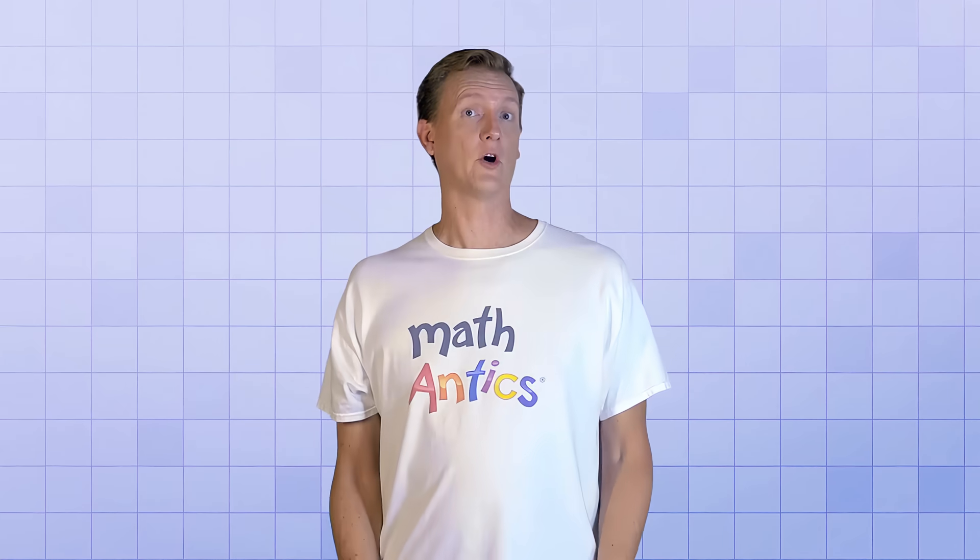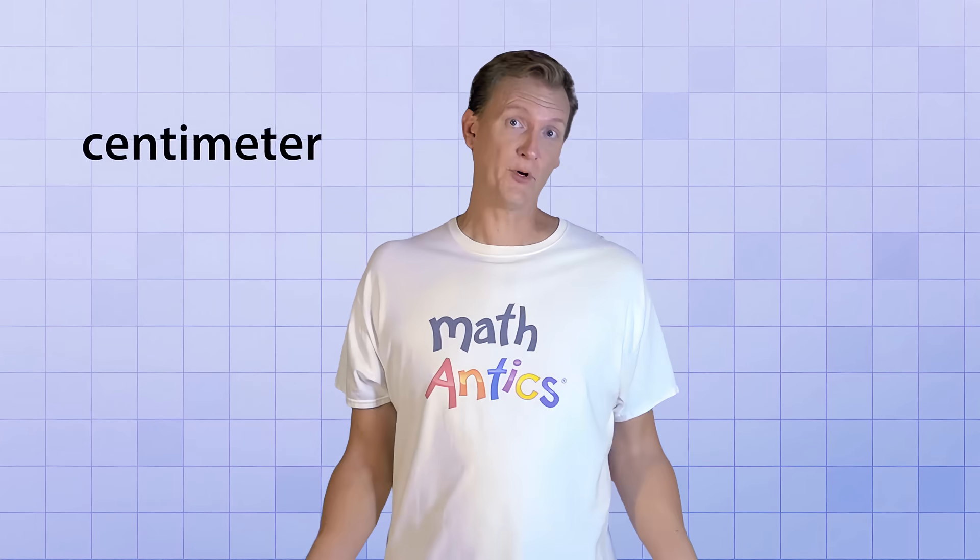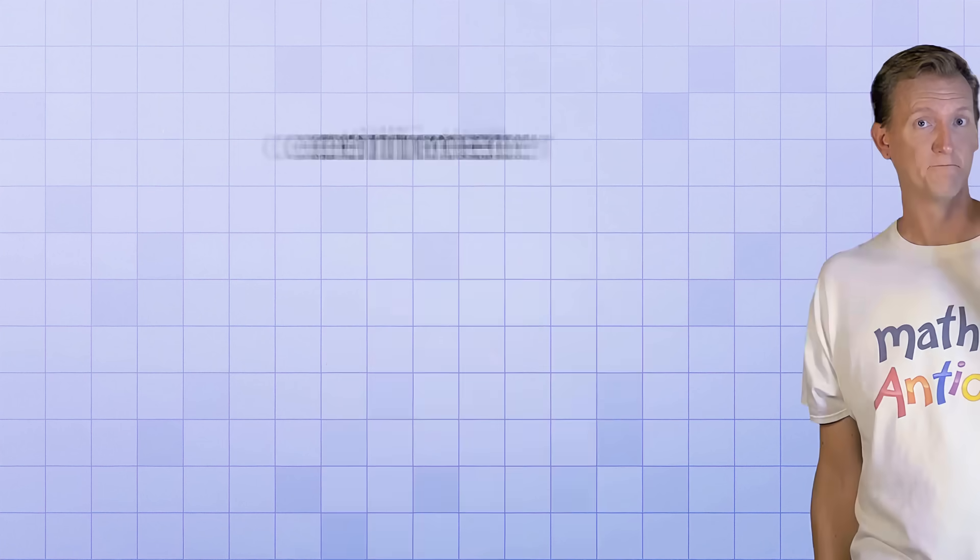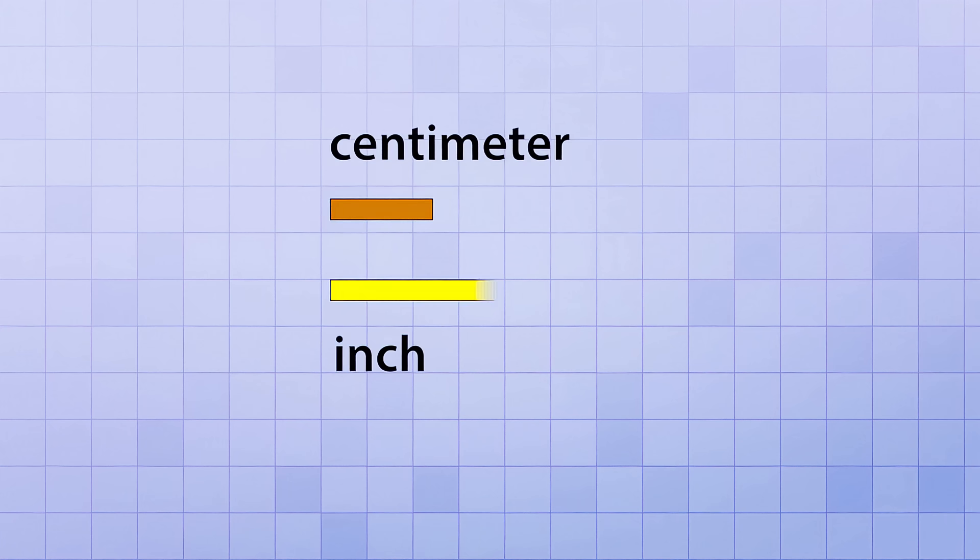We're going to start with a unit called a centimeter. A centimeter is pretty small. It's approximately the width of your pinky finger, or the diameter of a small marble. If you compare a centimeter to an inch, you'll find that it takes about 2.5 centimeters to equal 1 inch.